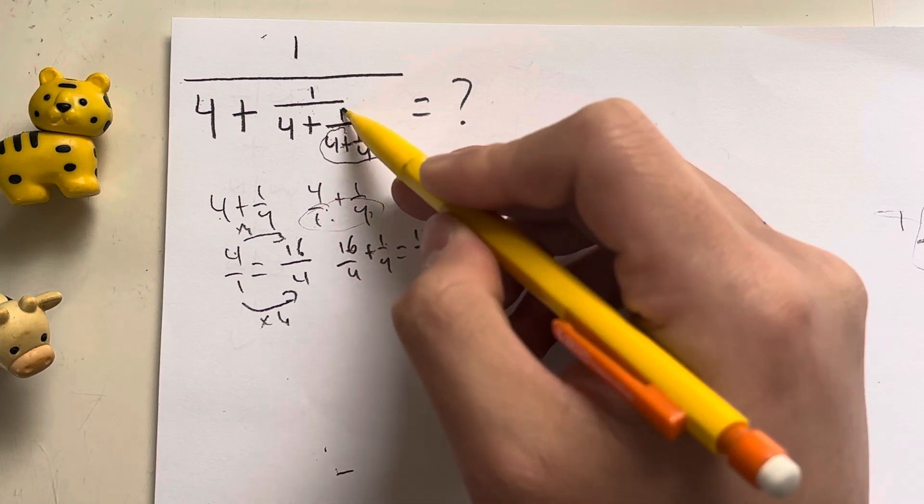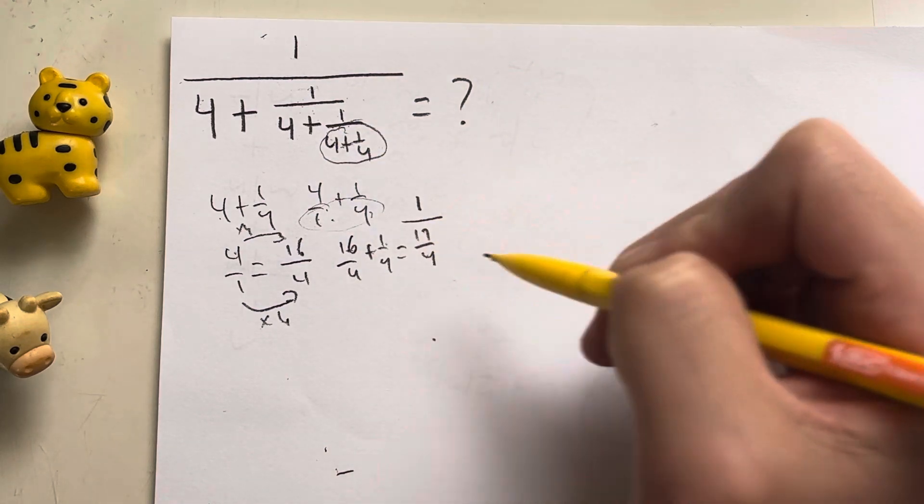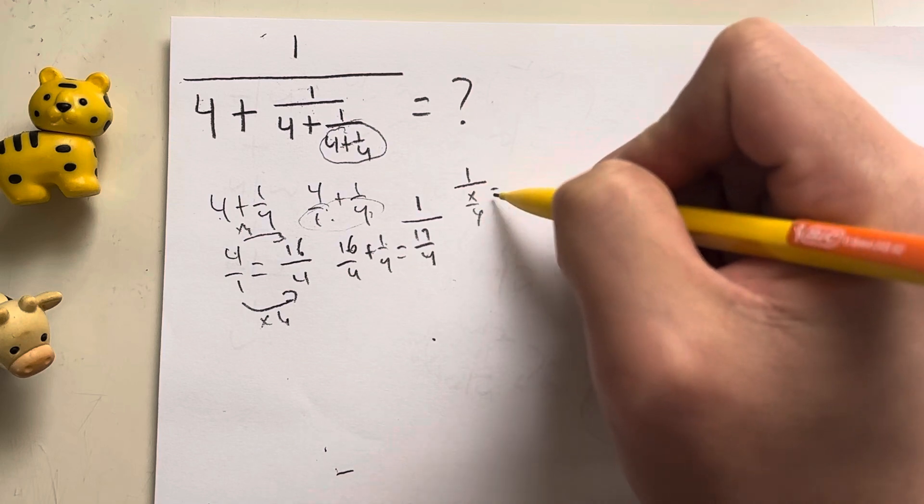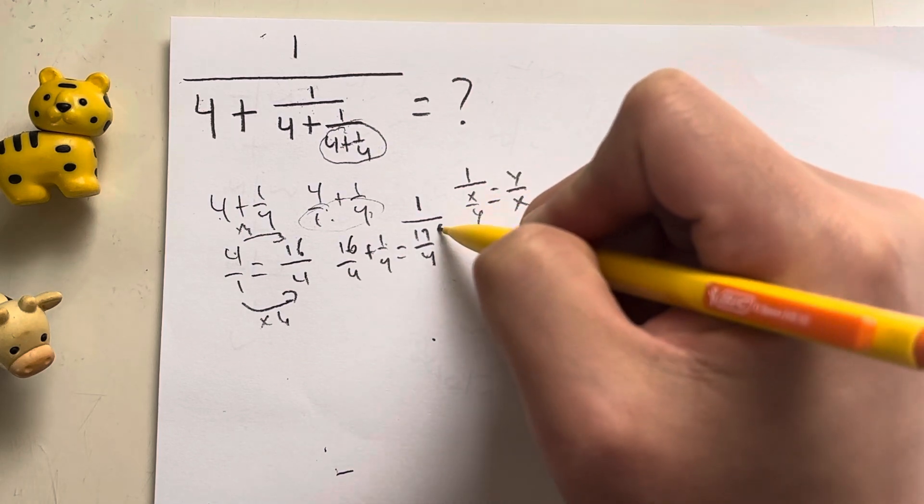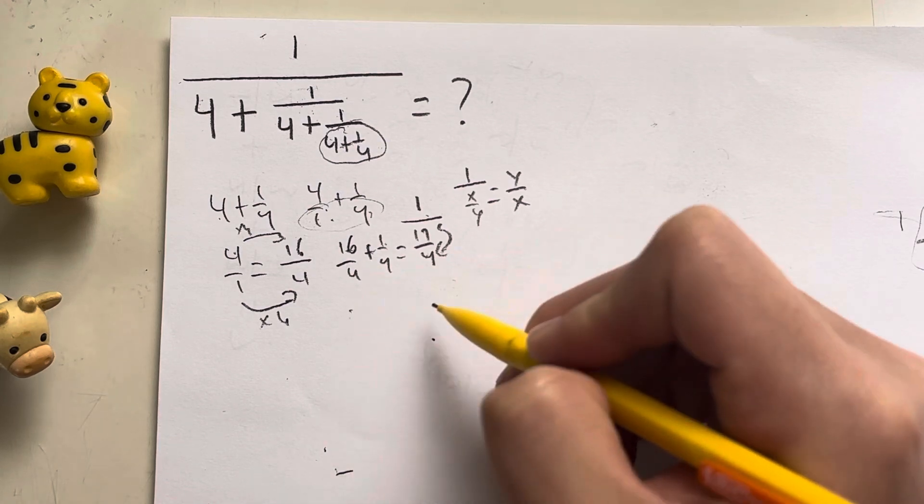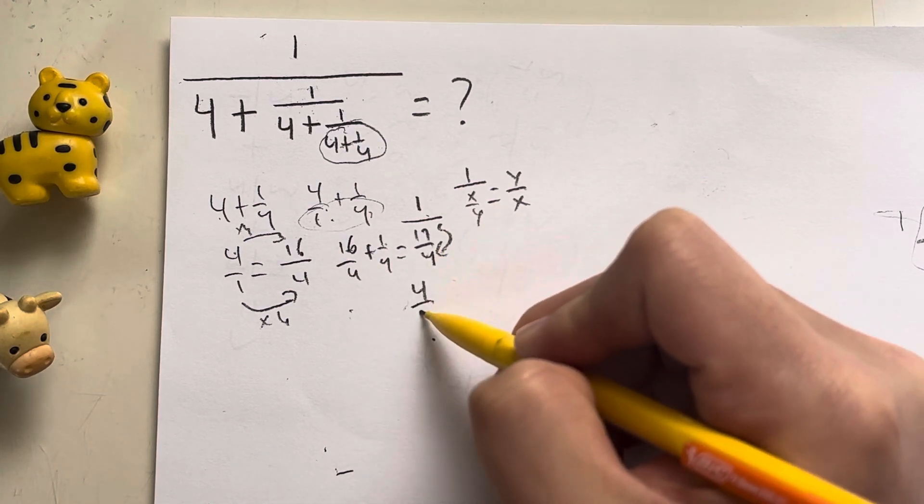And then I have this 1 over it. So 1 over 17 over 4, we have to remember this rule of math, where 1 over x over y is just equal to y over x. All you have to do is flip this. So this is actually just equal to, so 17 over 4 just becomes 4 over 17.